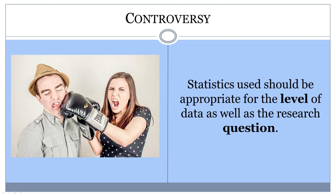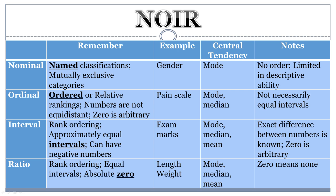Comment below to start a discussion. What is important to know when reviewing an article is how the data was collected so you can identify if the appropriate statistical tests were used to analyze the data. If you are doing research, try to collect data in the highest form possible so a wider variety of tests can be performed on it. Sometimes how you ask the question will determine what level your data is at. Knowing the level of measurement for your data will help you avoid making mistakes like taking the average of people's marital status.